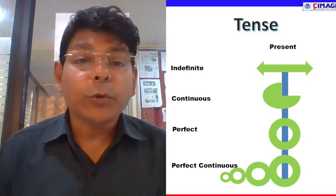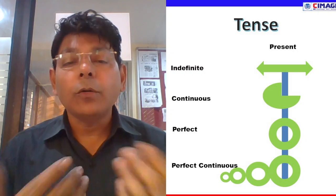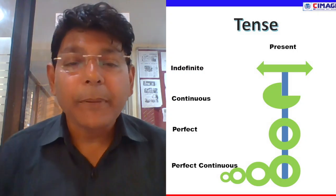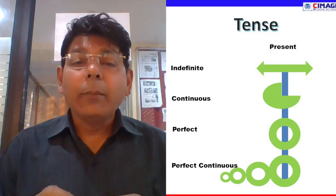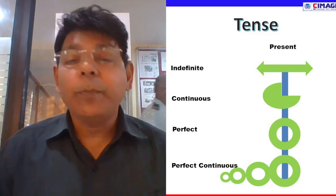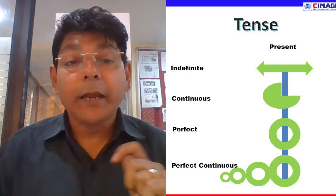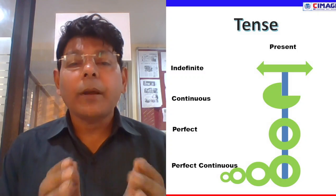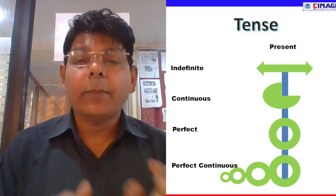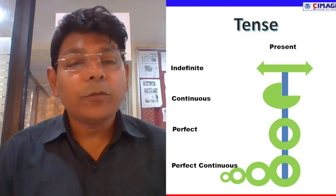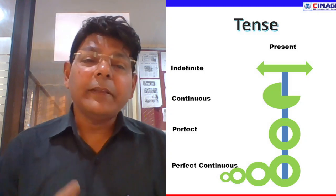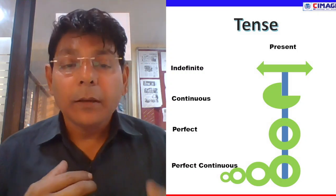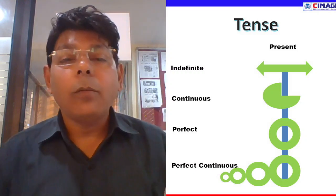अगली category आती है perfect की. Perfect यानि जो काम complete हो चुका है. Continuous में काम की शुरुआत हो चुकी होती है, चाहे वो 1% हो चाहे 99% — काम तो चल रहा होता है. Perfect में वो काम complete हो चुका होता है, यानि काम के completion के बारे में बात आती है. और अगली category है perfect continuous — इसमें tense के perfect होने का भी पता होता है, और साथ-साथ काम के दोबारा continuous हो जाने का भी भाव मिलता है.